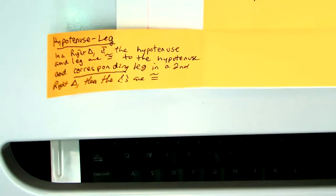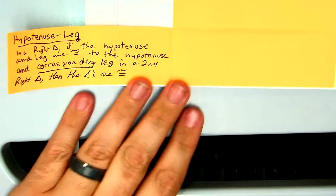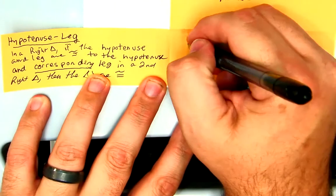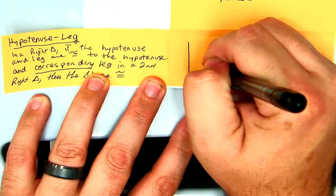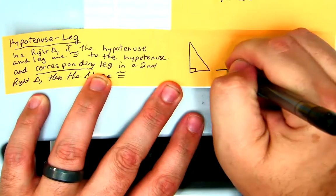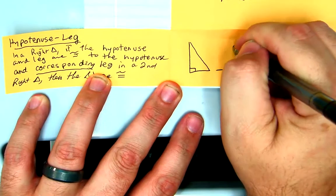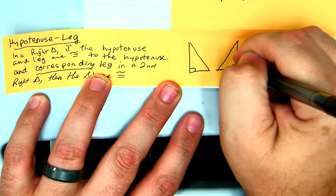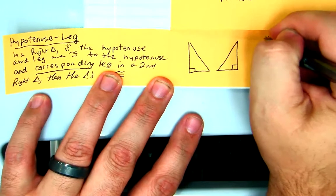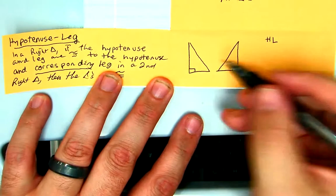Alright, I'm going to chance it. So far so good. Now here's what it looks like. You take a right triangle, then you have another right triangle. So this is hypotenuse leg.